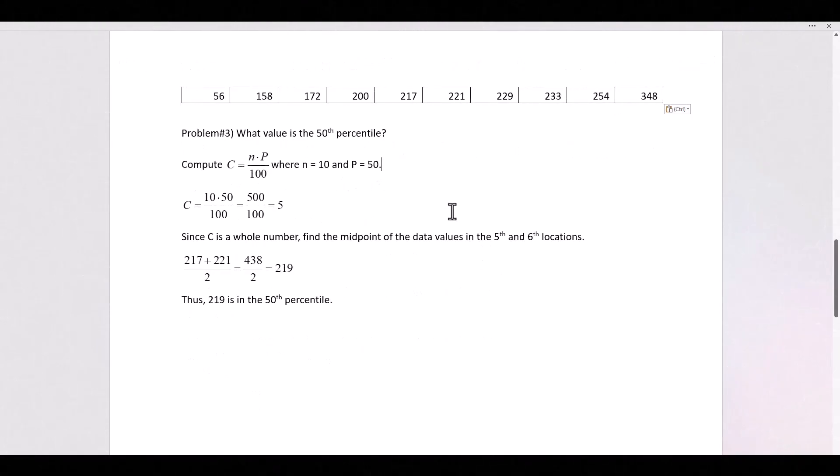Now for problem 3, we want to know what value is in the 50th percentile. In this case, N is still 10, but P is 50. So we calculate C, 10 times 50 is 500, divided by 100 is 5.